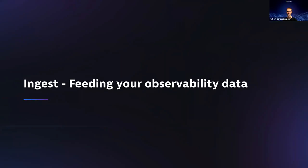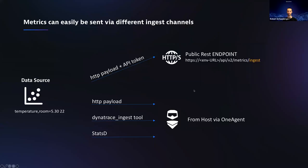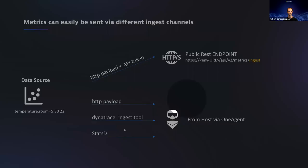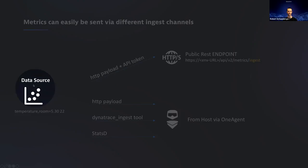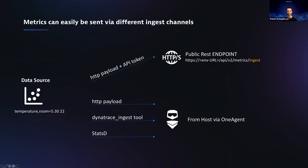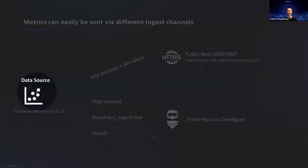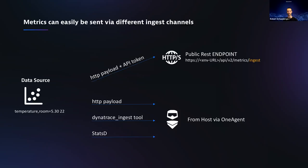Starting the lifecycle from ingest: imagine on the left side you have a generic data source — a metric store in the Kubernetes space, operating system metrics, a metric from your application, home automation, anything. This could be infrastructure metrics like CPU temperature or GPU percentage, but it could also be business-related metrics like pushing revenue numbers, customer numbers, or active customers on your application to the platform.